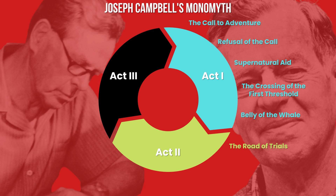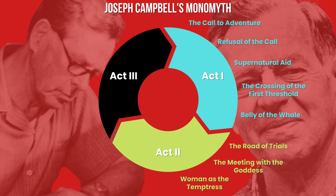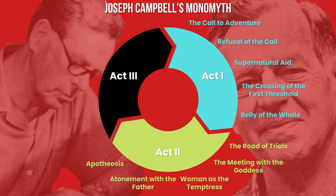The initiation, or Act 2, begins with the road of trials, where the hero has to prove their worth through a set of trials — usually difficult, causing bouts of failure and frustration. The meeting with the goddess is the second stage, where the hero meets allies who help them continue their journey. However, the hero is then tempted by power, fame, or a love interest to abandon their quest — a stage called woman as the temptress. Atonement with the father is a major turning point where the hero asks what their journey is truly about. After this, the hero reaches apotheosis, learning the true nature of their power and preparing for the most difficult part of their journey. The last stage in Act 2 is the ultimate boon, where the hero is triumphant, fulfilling the call to adventure.